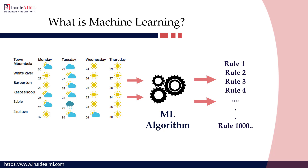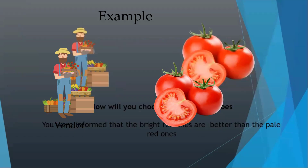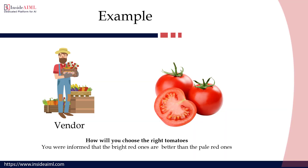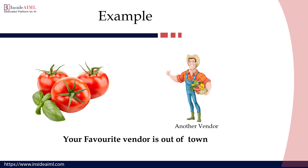Let's understand this with a really simple example. Imagine you have a vendor from whom you always buy vegetables. Your mom told you to buy tomatoes, so you went to choose the right ones — otherwise your mom is going to scold you. You were informed that the bright red ones are good and the pale red ones are not. So you pick the bright red ones and they were good. Next day you need more tomatoes but your favorite vendor is out of town, so you go to a new vendor. At this new vendor, you observe that the softer tomatoes are better compared to the hard ones, so you buy the soft ones.